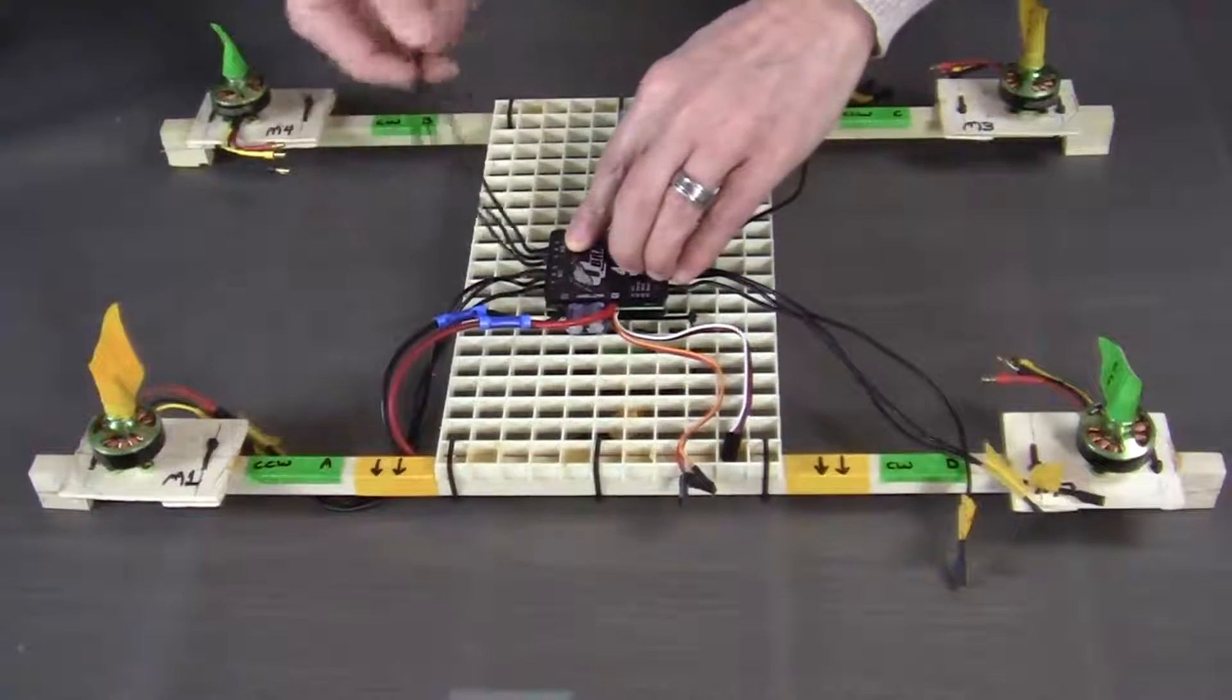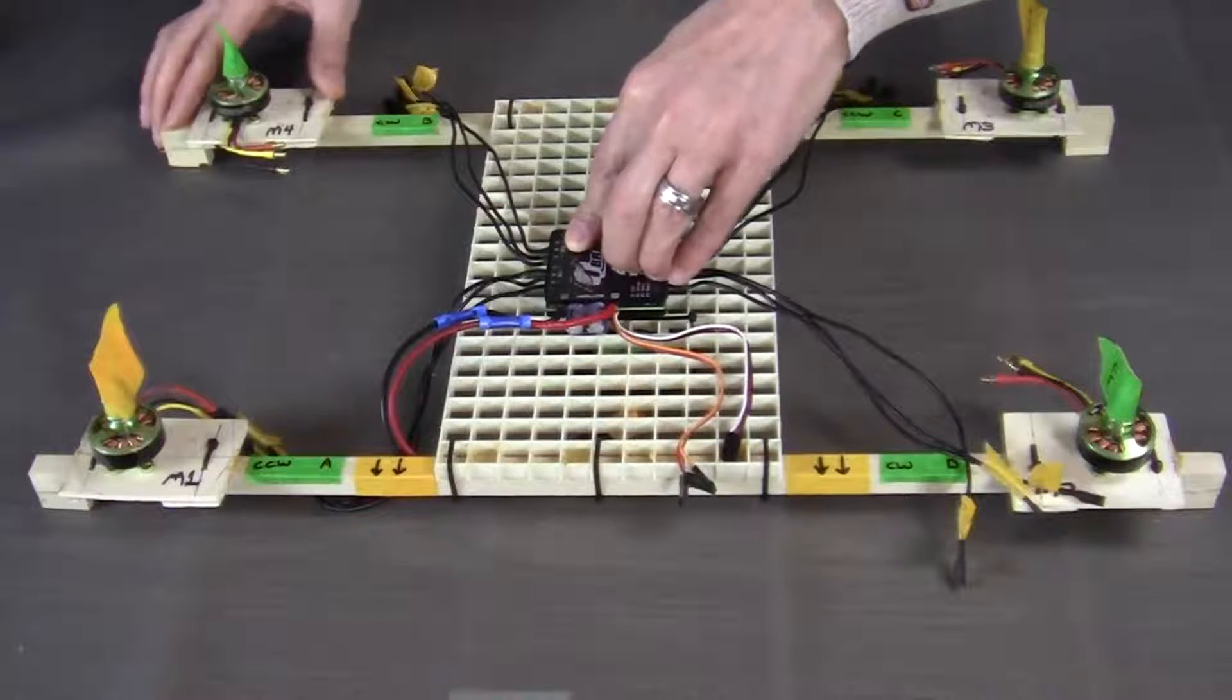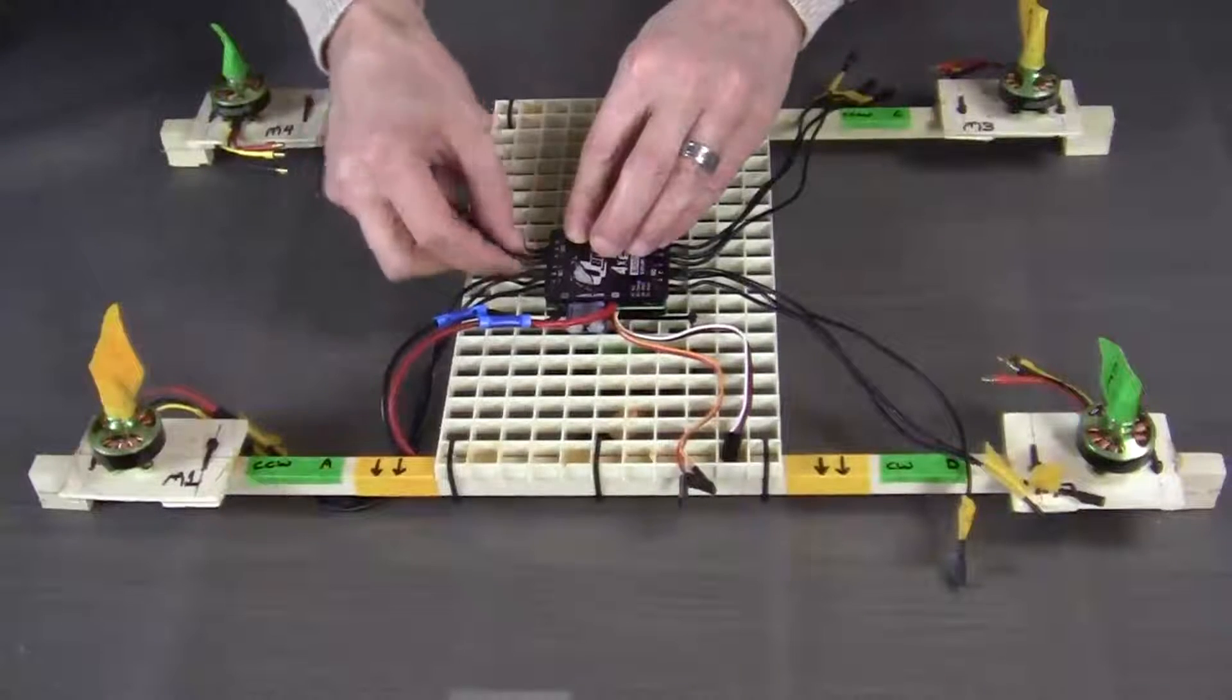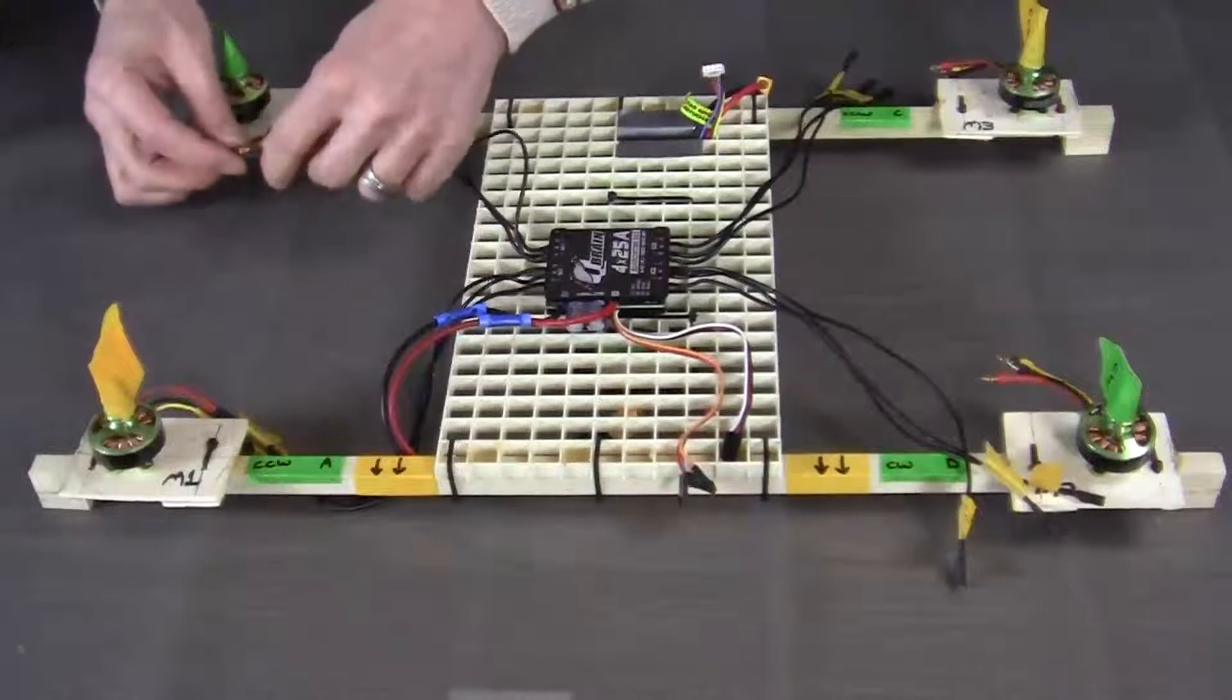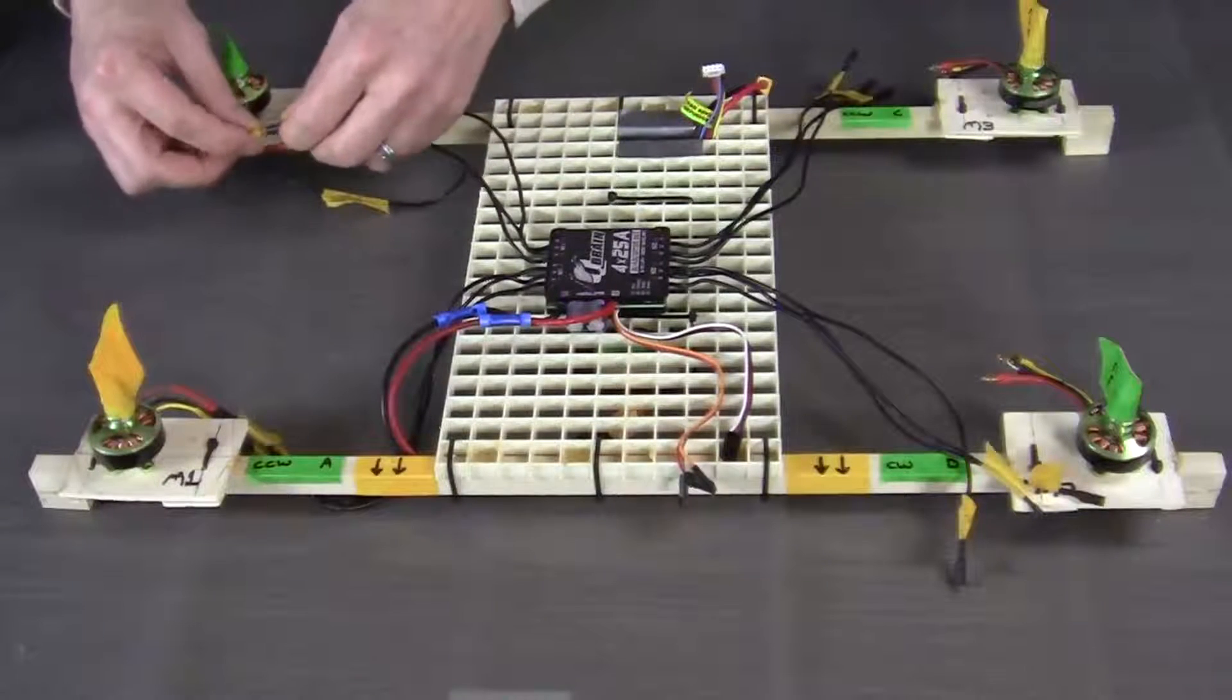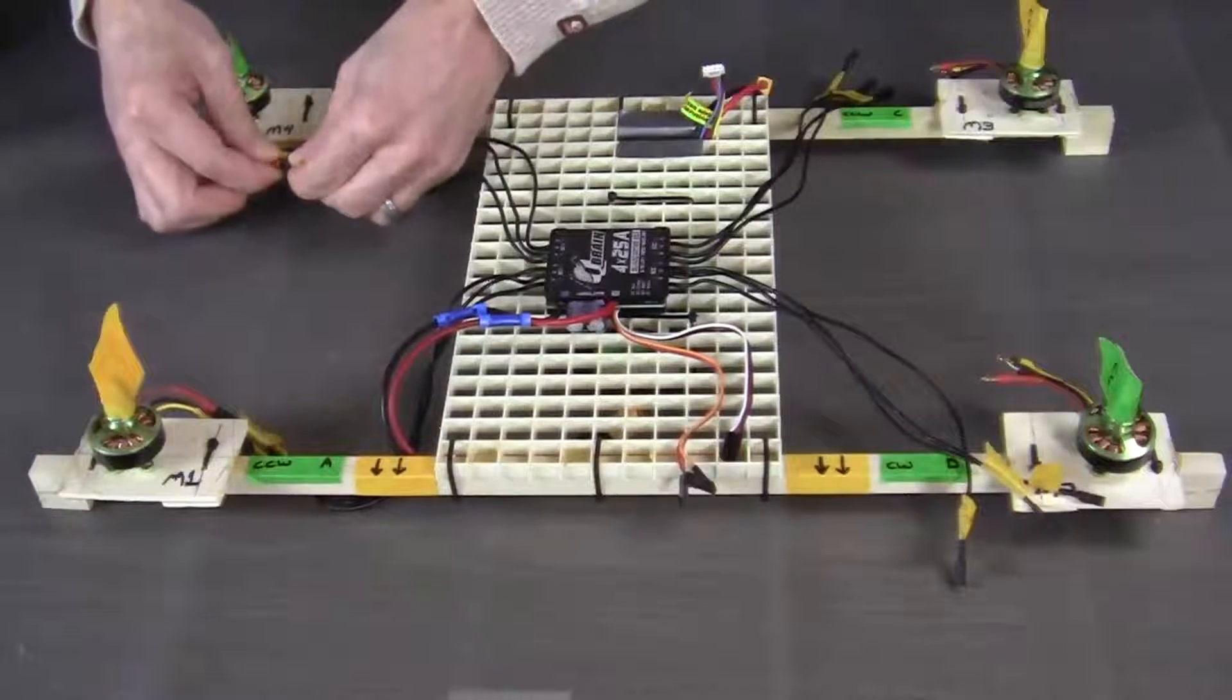Now we're going to connect the M4 motor which is going to be, if you're looking at the quadcopter frame from the front, it's going to be the left rear motor. We want that motor to turn in a clockwise rotation. So we're going to take the M4 A wire and connect it to the black wire on the M4 motor. We're going to take the B wire and connect it to the yellow wire on the M4 motor. And we're going to take the C wire and connect it to the red wire on the M4 motor.